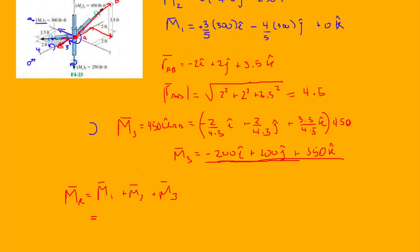So the x component: 180 − 200 = −20i. For j: −240 + 200 = −40j. From m2 we have −250k, and from m3 we have +350k, giving −250 + 0 + 350 = +100k. The resulting moment is therefore −20i − 40j + 100k pound-feet.